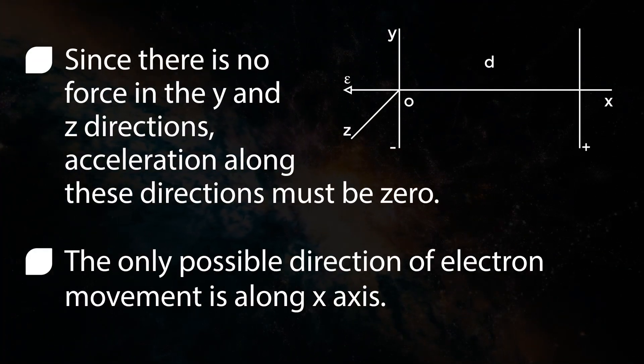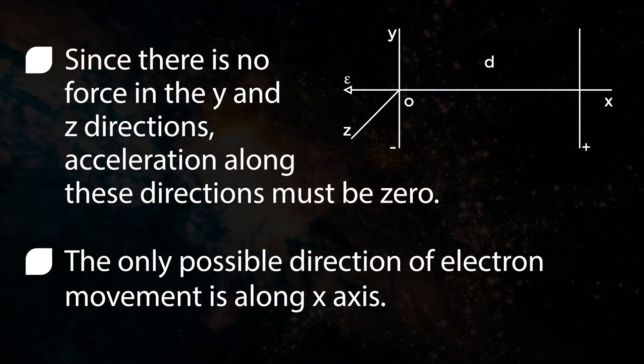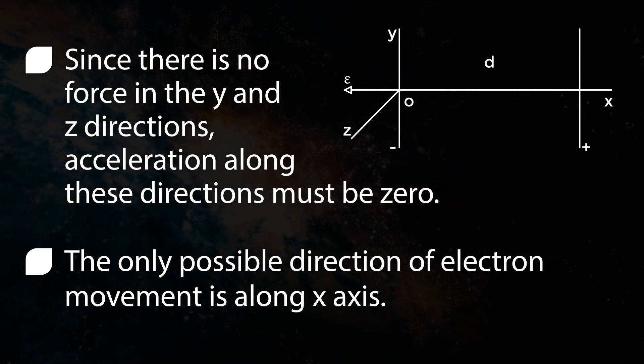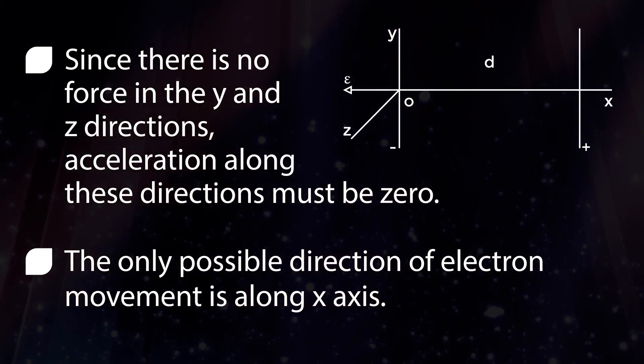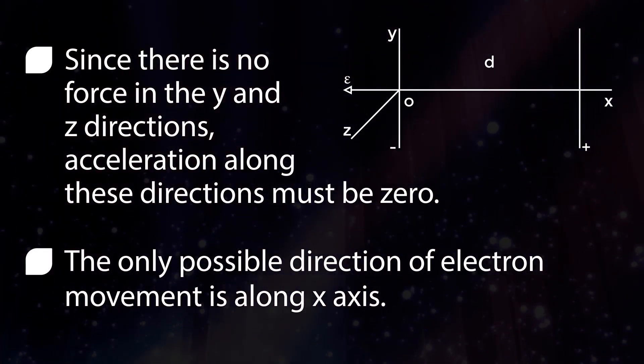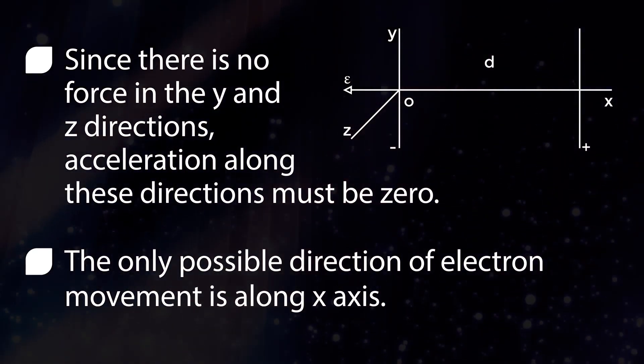That is, there is only one field in the minus x axis. Since there is no force in the y and z directions, acceleration along these directions must be zero. Thus, the only possible direction of electron movement is along the x axis.